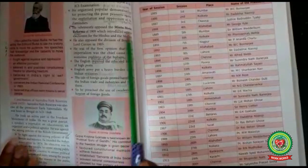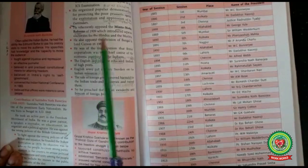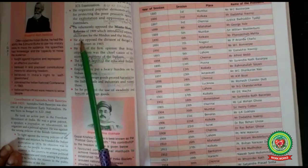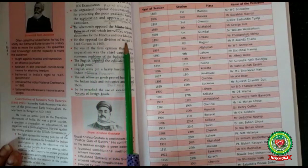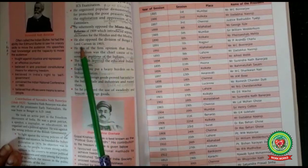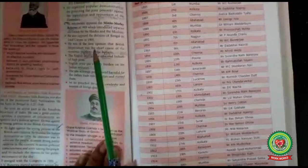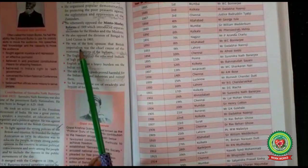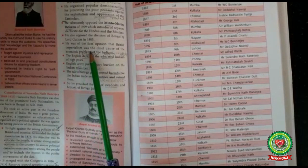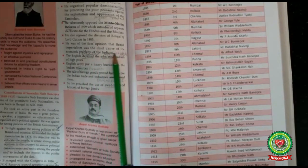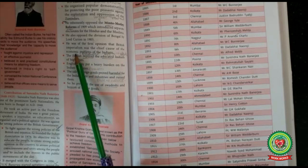He opposed the Minto-Morley Reform, known as the Indian Council Act of 1909, which introduced separate electorates for Hindus and Muslims. He also opposed the division of Bengal done by Lord Curzon in 1905. He was firm in his opinion that British imperialism — when a strong country rules over a weak country — was the chief cause of the economic problems of India, related to income, expenditure, production, and consumption.